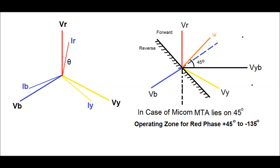Here, theta is the power factor angle for the normal loaded condition. Now, during a fault at R phase, the voltage at R phase will fluctuate — that is, the voltage will dip. For the healthy phases, Y phase and B phase, that is yellow and blue phase, are healthy phases. Therefore, a reference voltage is taken from the healthy phases for determining the proper direction of the fault location. That is, the reference voltage for red phase fault is taken as VYB, the voltage between yellow and blue phase.